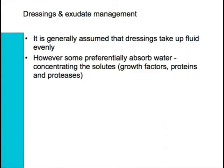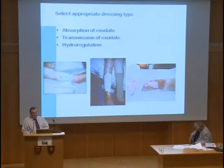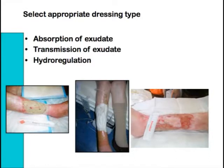It's generally assumed that all dressings take up fluid evenly. However, some preferentially absorb water. If we're preferentially absorbing the water element of exudate, we're going to increase some of the negative elements left behind on a wound. So taking exudate evenly and not changing the concentrations at the wound interface are also important. We need to think about selecting appropriate dressings — what we need them to absorb, how we want them to transmit things, and how we're going to maintain hydro-regulation or balance at the wound itself. These are particular challenges with dressings under compression bandaging.